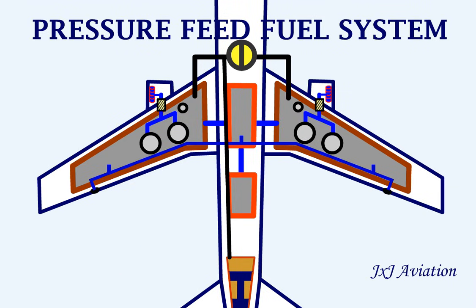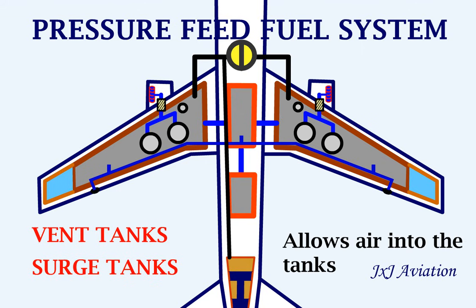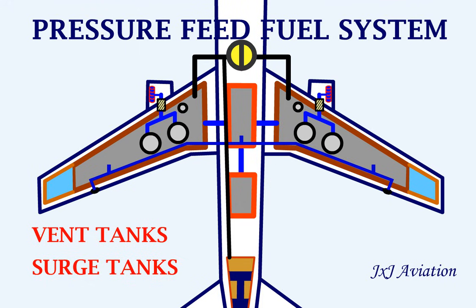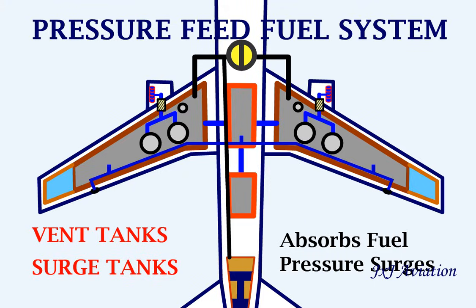In addition to the fuel tanks, there is another tank called the vent tank or surge tank. These tanks allow air into the fuel tanks to stabilize the air pressure as the fuel is being consumed. They also provide additional space that allows fuel expansion due to temperature variation and absorbs pressure surges of the fuel.